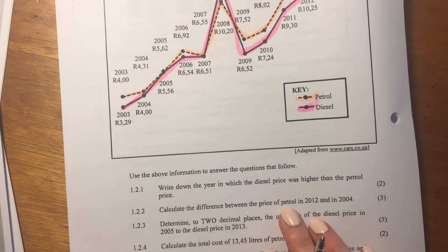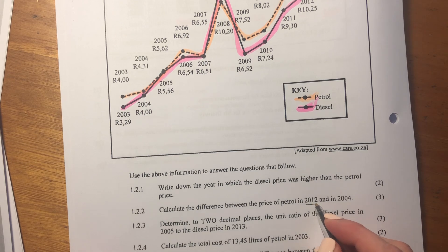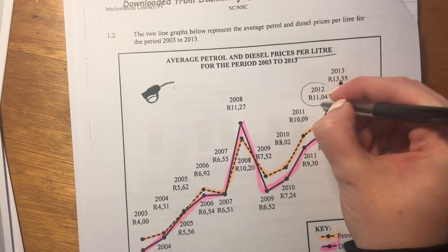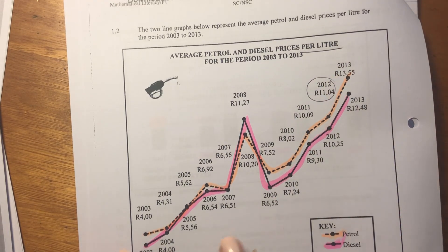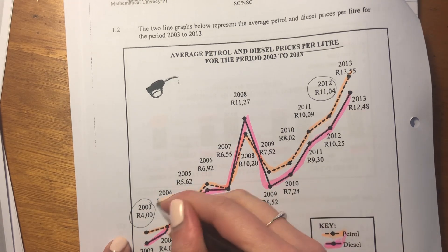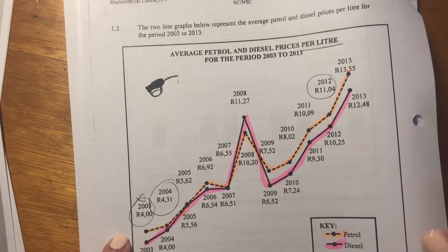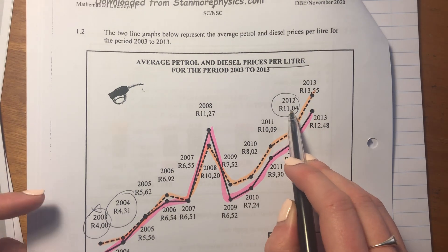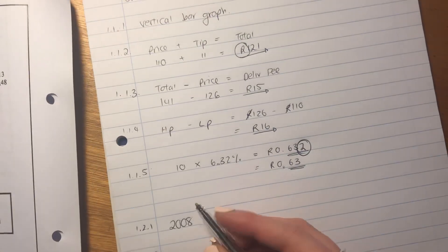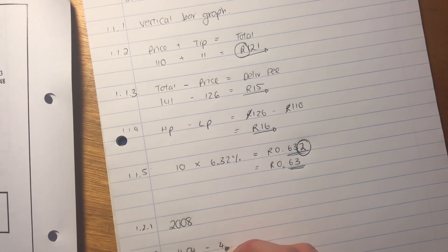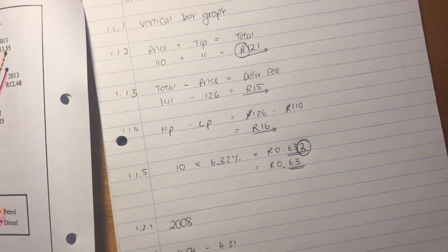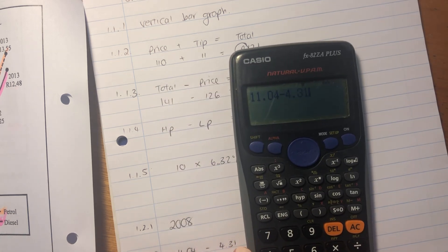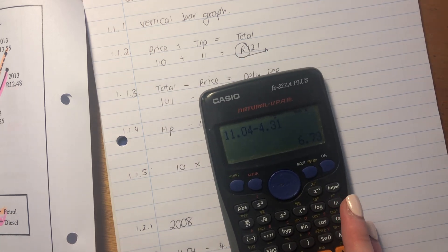Then it says: calculate the difference between the price of petrol in 2012 and in 2004. For 2012, we're looking at the petrol price. The difference is going to be 11.04 minus 4.31. Put that in your calculator — 11.04 minus 4.31. Our answer there is 6.73.